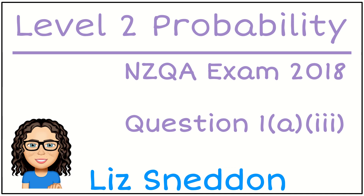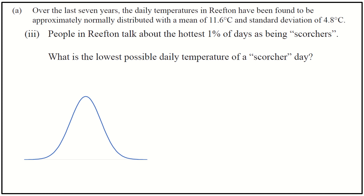Hi, I'm Liz Sneddon. Let's have a look at the answer to question 1a part 3. So what we have here is our normal distribution, and this is talking about temperatures. We've got our mean of 11.6 degrees and a standard deviation of 4.8 degrees.